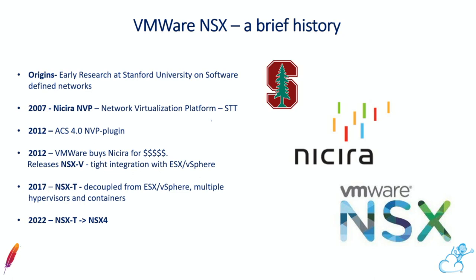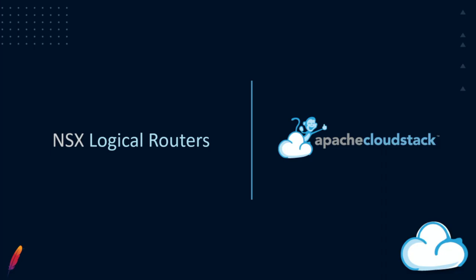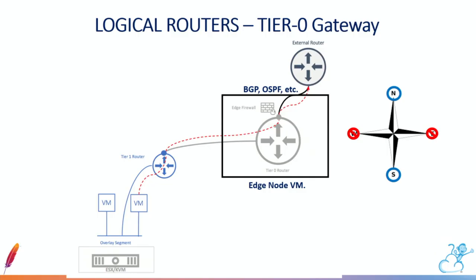Then they integrated it very tightly in the vSphere ecosystem. In 2017 they created NSX-T, which was a bit decoupled. And now NSX is just NSX-4 — there used to be different versions and types, now it's just one, and it works basically on VMware. NSX uses logical routers. Here we can see what they call a T0 gateway, which takes care of your north-south traffic — your BGP peering, everything going upstream.